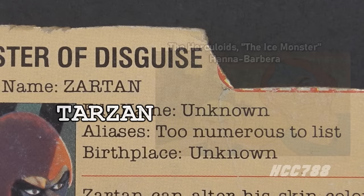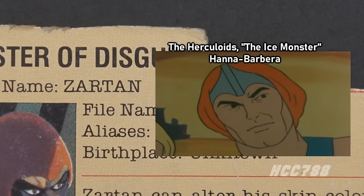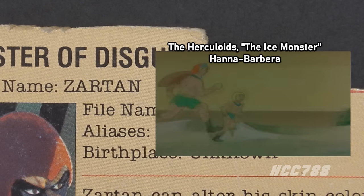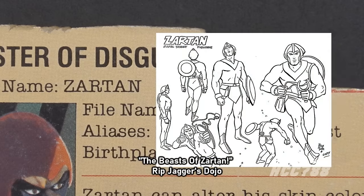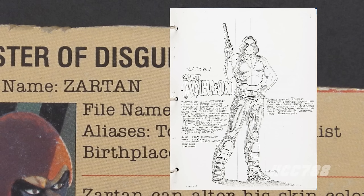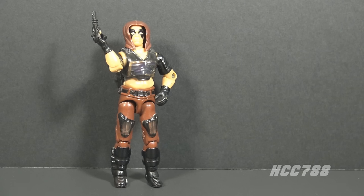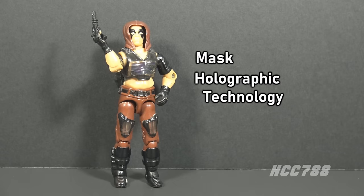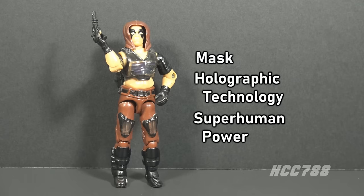In the 1960s TV show The Herculoids, the character Zandor was originally going to be named Zartan, but it was changed because it was too similar to Tarzan, creating a possible copyright issue. Zartan's brother Zandar's name is very similar to the Herculoids' Zandor. There is a piece of art by Ron Rudat in which Zartan has the name Captain Chameleon, marked 1983. We know Larry Hama didn't create the name Zartan — it was given to him by Hasbro, and the name came before the file card text. This is evidence that Captain Chameleon may have been a pre-production name for Zartan.